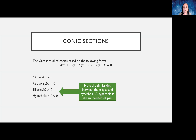Conic sections were originally studied by the Greeks, and they didn't study them based on the form we use in this course. They had everything multiplied out, looking at equations of the form ax² + bxy + cy² + dx + ey + f = 0. Circles have a equal to c, parabolas have a times c equal to zero, ellipses have ac greater than zero, and hyperbolas have ac less than zero.